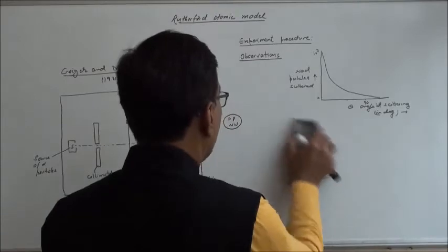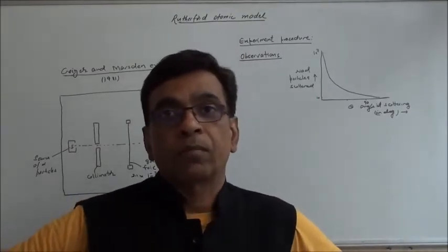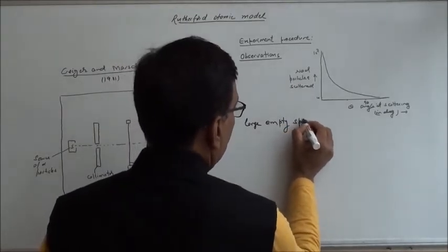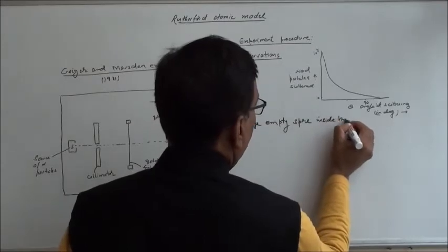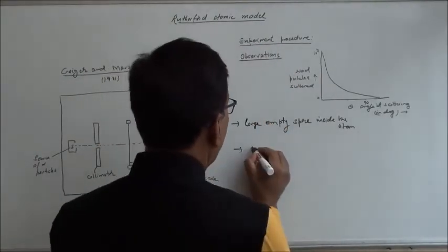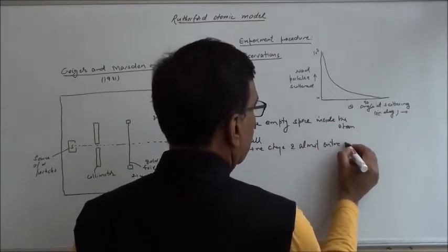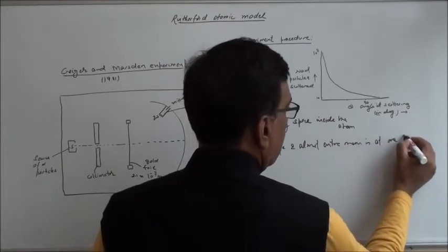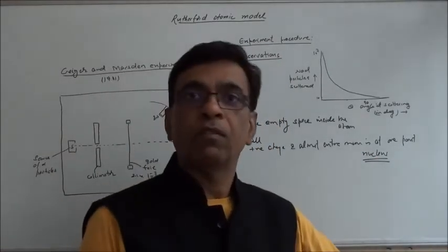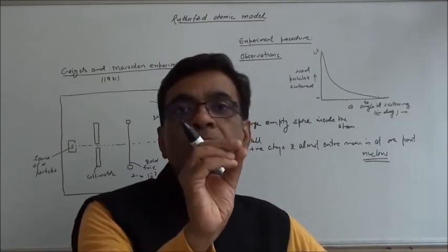Taking all three observations together, Rutherford gave his atomic model. The important points were: there is a large empty space inside the atom (because most particles go straight), and all positive charge and almost entire mass is at one point — he named it the nucleus. So Rutherford gave the concept of the nucleus: all positive charge is inside the nucleus, and this nucleus is at the center of the atom.